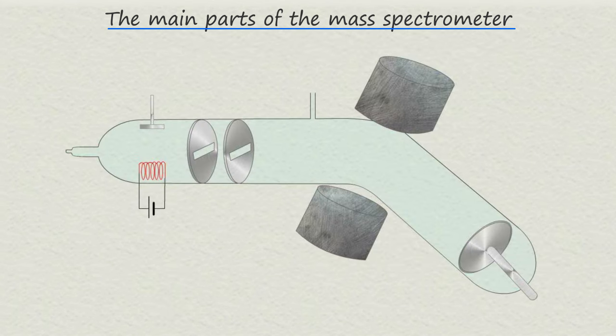The diagram shown outlines the main working parts of a typical mass spectrometer. The main parts you need to be aware of are firstly the sample port. Now this is where the substance to be analyzed is placed inside the mass spectrometer.